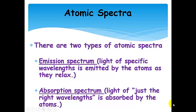There are two types of atomic spectra. The first one is called an emission spectrum. This is where light of specific wavelengths is emitted as photons by the atoms as they relax. We've excited them, and now they're emitting only certain wavelengths of light.